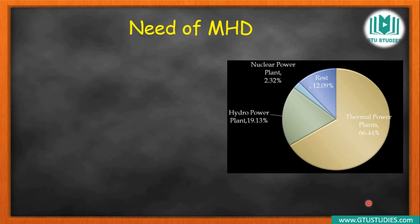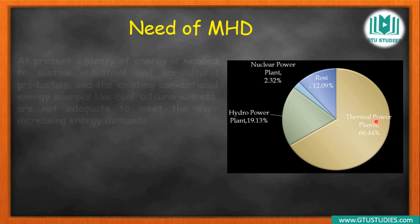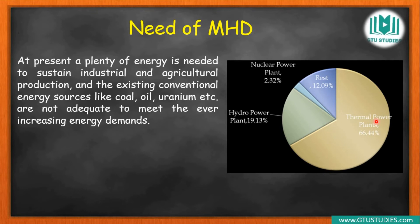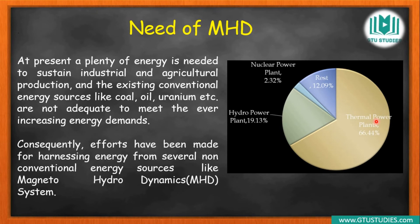MHD generators produce less pollution. Currently we mainly depend on electrical energy from thermal power plants. If we continue thermal power plants, the power output goes up but coal resources are depleting, the source is becoming scarce, cost is rising, and pollution is also increasing. So there are mainly two key advantages of MHD generation.